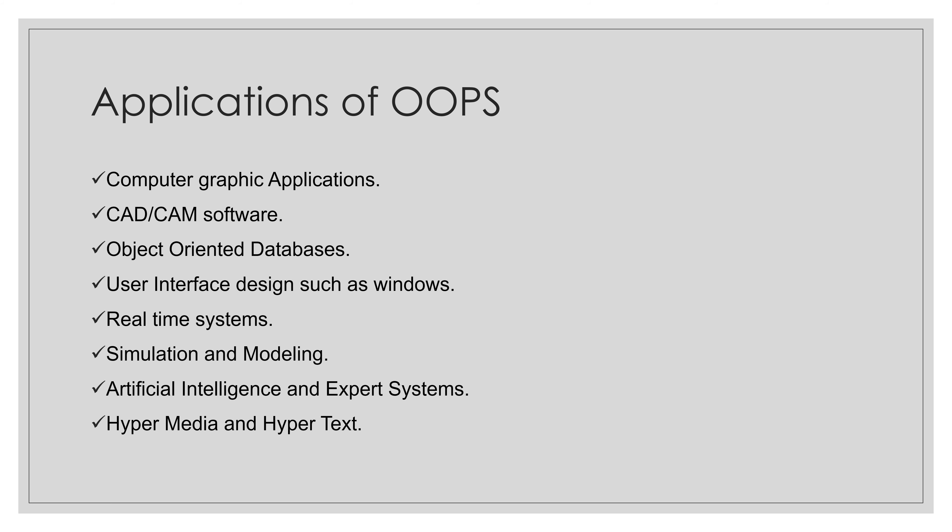Fifth, real-time systems — real-time systems inherit complexities that make them difficult to build, and object oriented techniques make it easier to handle those complexities. Sixth, simulation and modeling — it is difficult to model complex systems due to varying specifications of variables. These are prevalent in medicine and natural sciences such as ecology, zoology, and ergonomics. OOP provides an alternative approach to simplify these complex modeling systems.